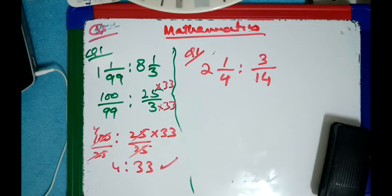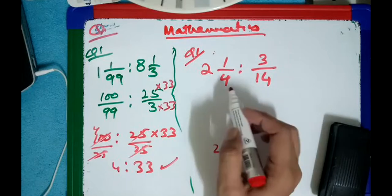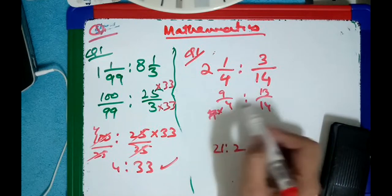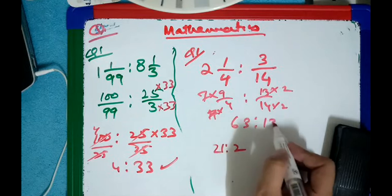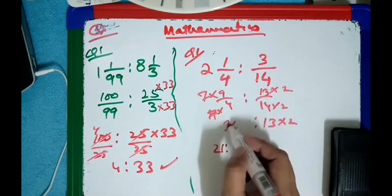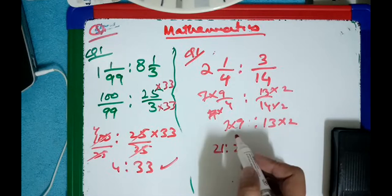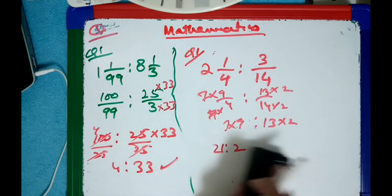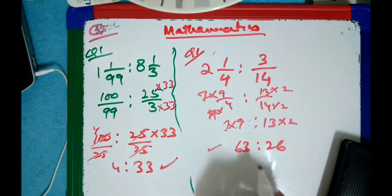The answer is 21 ratio 2. Let me check: 2 whole 1 over 4 is 9 over 4, ratio 3 over 14. Then 9 × 2 = 18... actually: multiply by 2 gives 18, multiply by 7 gives 63. And 3 × 2 = 6. Wait — it is 13? No, you said 3, not 13. So 3 × 2 = 6. The answer is 21 ratio 2. Okay, the answer is this.